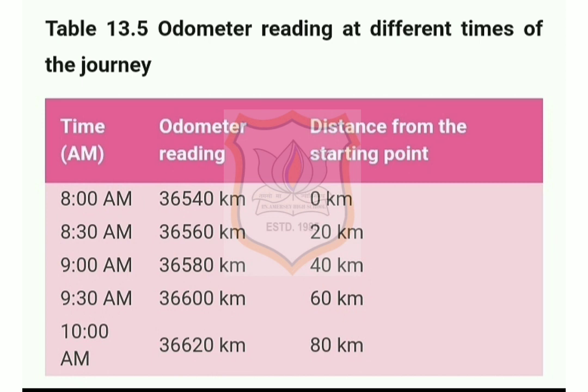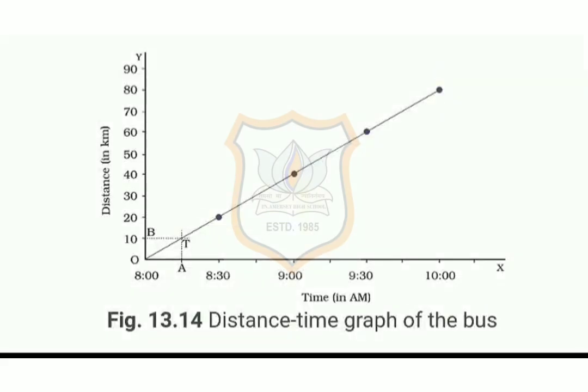Some points to keep in mind while choosing the most suitable scale for drawing a graph are: the difference between the highest and lowest values of each quantity, the intermediate values of each quantity so that with the chosen scale it is convenient to mark values on the graph, and the need to utilize the maximum part of the paper. You can now draw the distance-time graph for the motion of the bus.